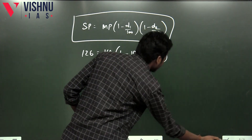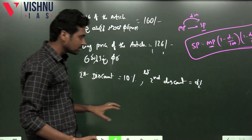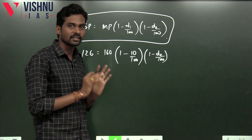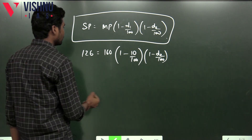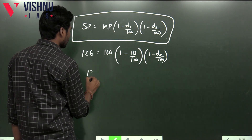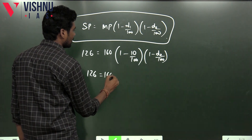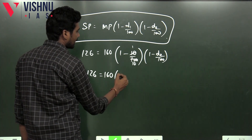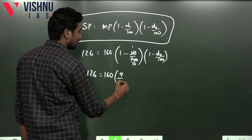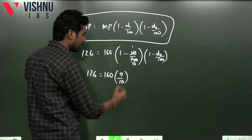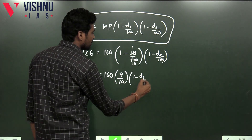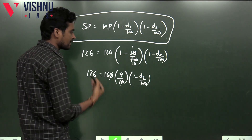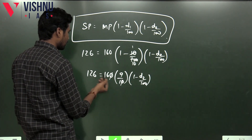We substitute the data and apply the formula. So we simplify: 126 equals 160 into (1 minus 10 by 100), which is 9 by 10, into (1 minus D2 by 100). We cancel zeros on both sides to simplify further.